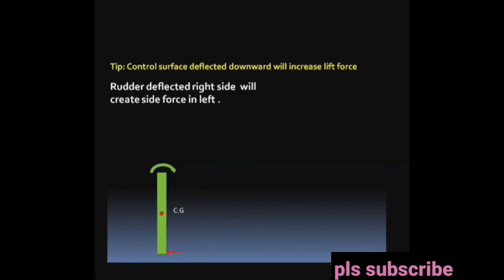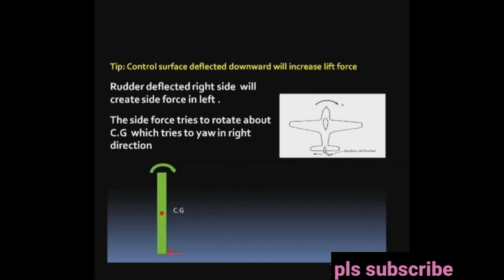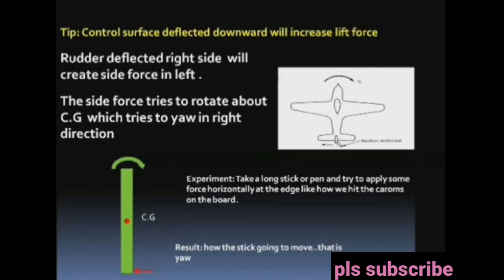The rudder deflected to the right side will create a side force to the left. The side force tries to rotate the plane about its center of gravity, which causes the aircraft to yaw in the right direction. As an experiment, take a long stick or a pen and try to apply some force horizontally at the edge — the movement in that direction is called yaw.